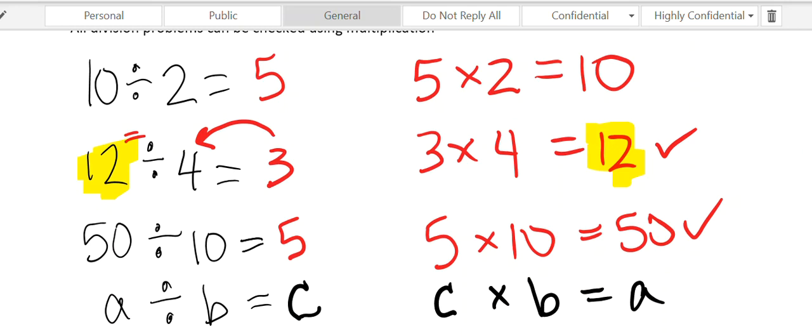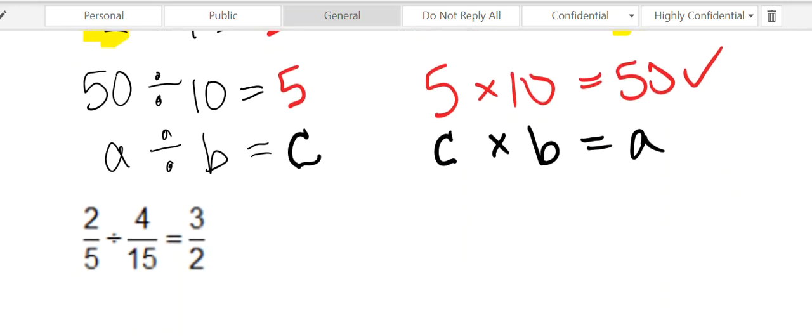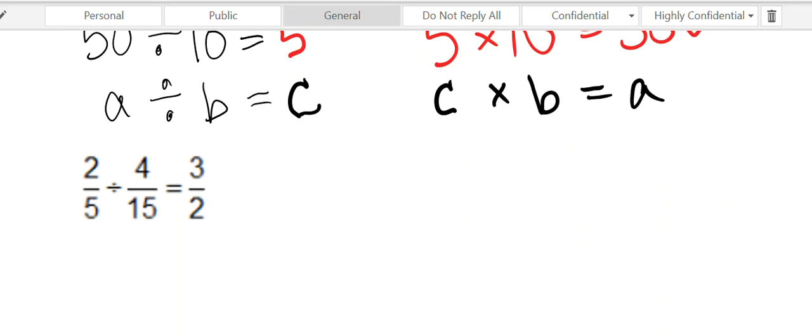Let's apply it to a fraction problem. What if we're given this division problem and told to check the answer using multiplication? Well, the dividend is 2 fifths, the divisor is 4 fifteenths, the quotient is 3 over 2.